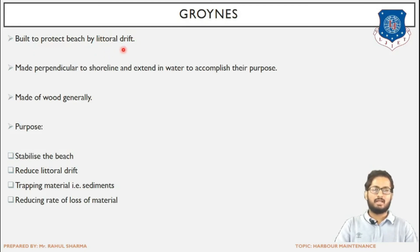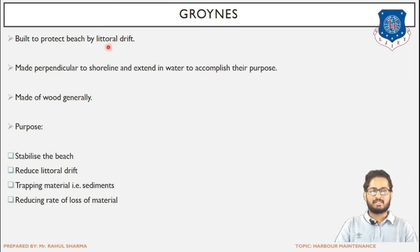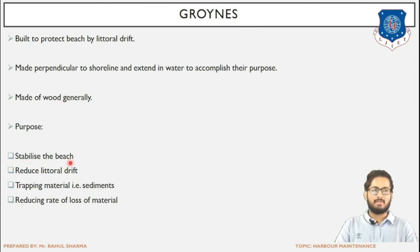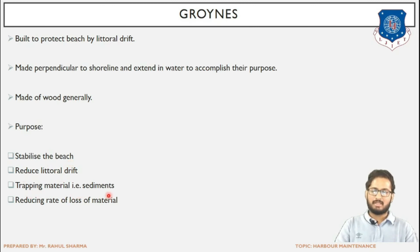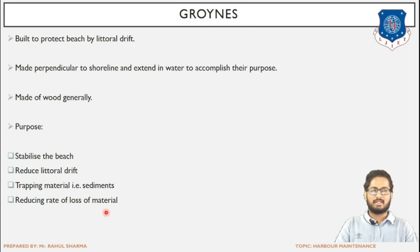Littoral drift is basically related to movement — drift means movement, that is the movement of sediments along the land of the beach. Groynes are made perpendicular to the shoreline and extend into the water. Their purposes are to stabilize the beach by making sure that the profile of the beach is preserved, to reduce the littoral drift, and to trap material — that is, the sediments. The sediments or soil particles will be trapped inside these groynes, reducing the rate of loss of material from the beach.